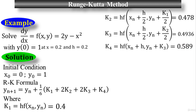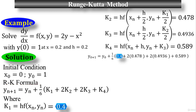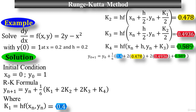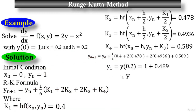Now substitute all the approximate values of k₁, k₂, k₃, and k₄ — the four stages — into the formula. k₁ = 0.4, k₂ = 0.478, k₃ = 0.4936, and k₄ = 0.589. This gives y₁ = y(0.2) = 1 plus 0.489. Since n = 0, y_sub_1 = 1, and the final value is y₁ = 1.489. This is the final approximate value for y.